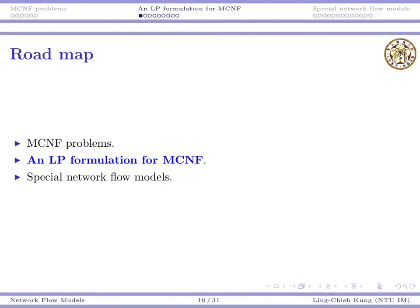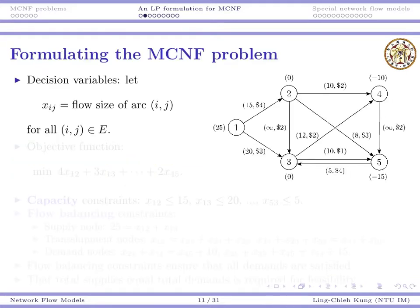So now let's try to formulate our MCNF problems as mathematical programs. For this problem, let's use the example we just saw as the main example. For this kind of problem, as we mentioned, what we want to decide is the flow size for each arc. We need to decide for each arc what's the amount we want to send through. So xij will be our notation for flow size of arc (i,j).